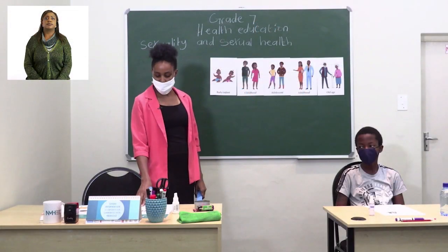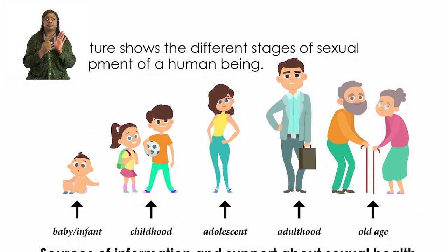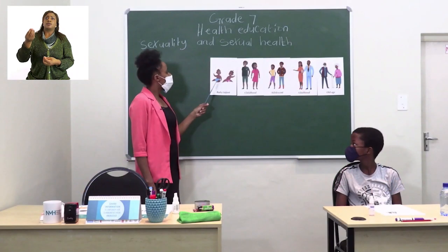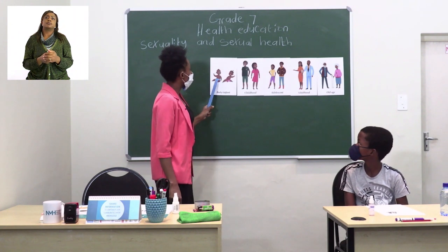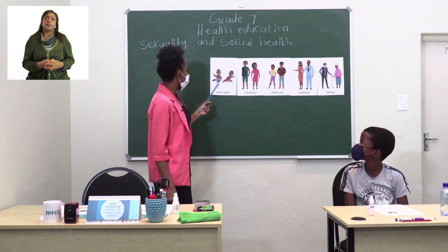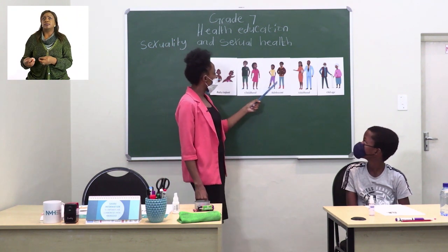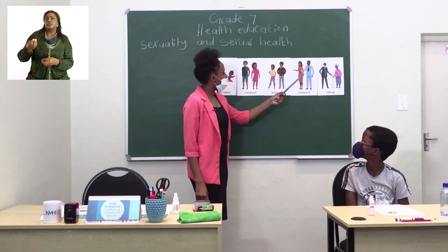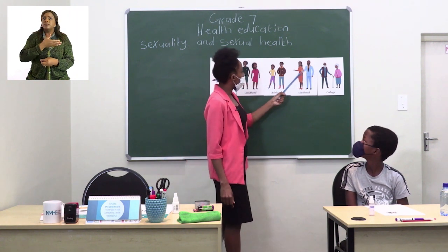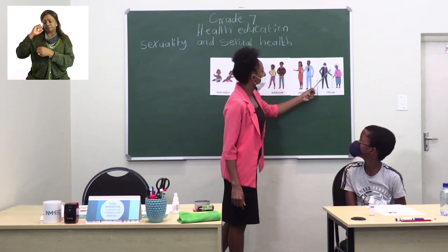Let's turn to page 24, where we have different diagrams or pictures on the stages of human development. Now on the chalkboard, we have different stages of sexual development. The first stage is a baby or infant, and then we have childhood. The next stage is an adolescent, and then adulthood, and the last stage is old age.